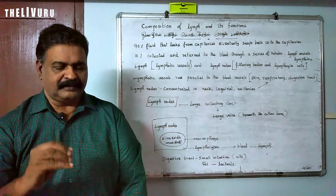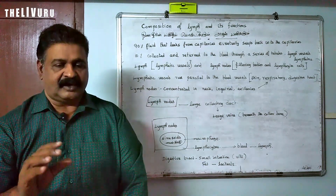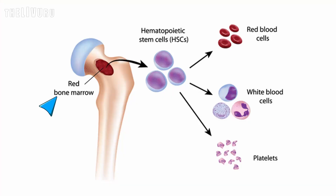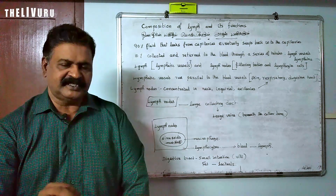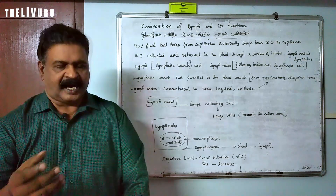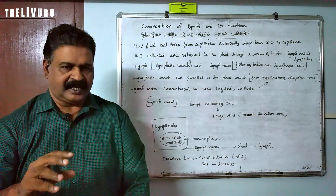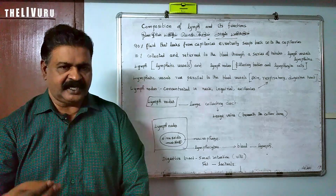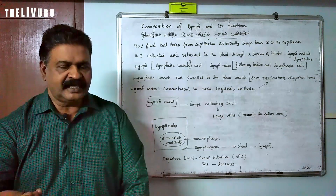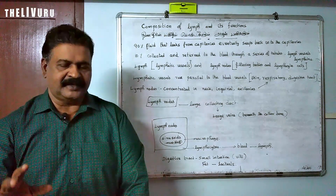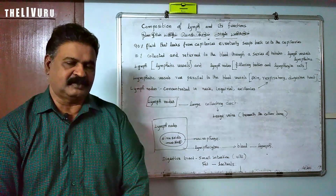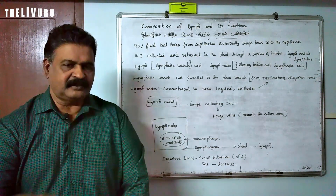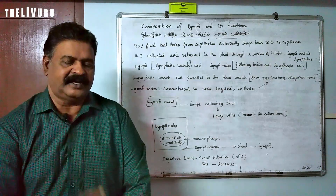All blood cells are formed in the bone marrow. You can see those lymph cells that are formed there. These cells are formed in bone marrow, which is a primary lymphoid organ. The first category is primary lymphoid organs, and the second category is secondary lymphoid organs, which are also very important.